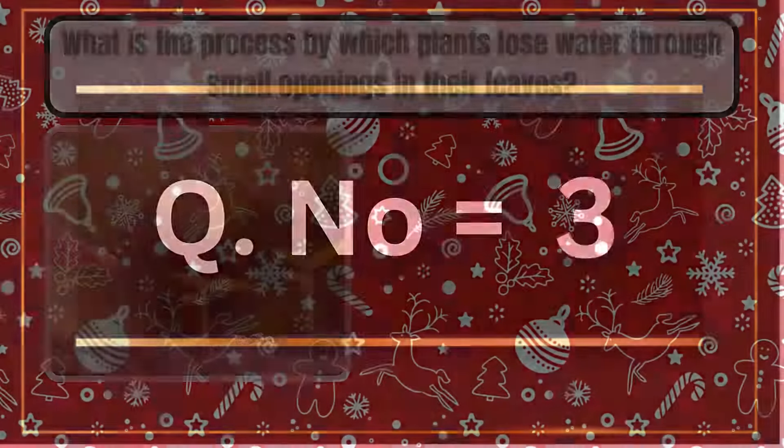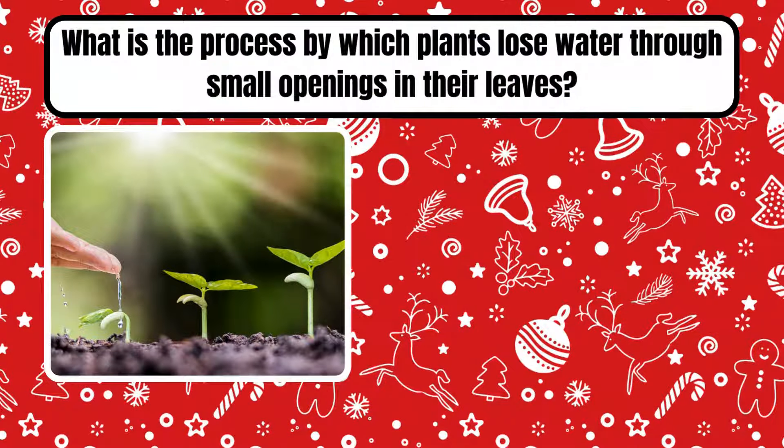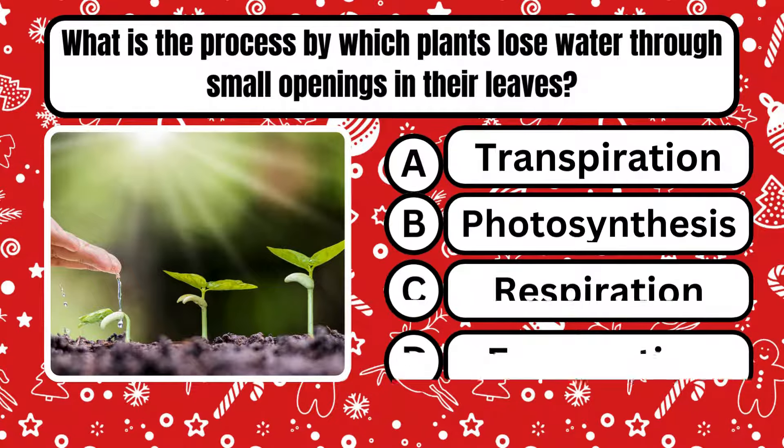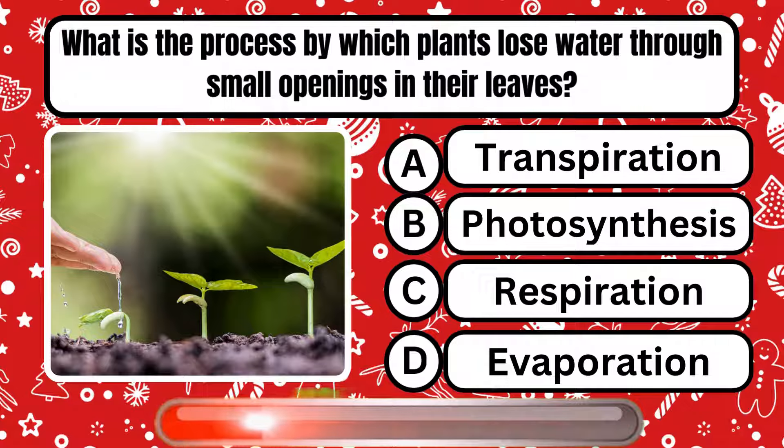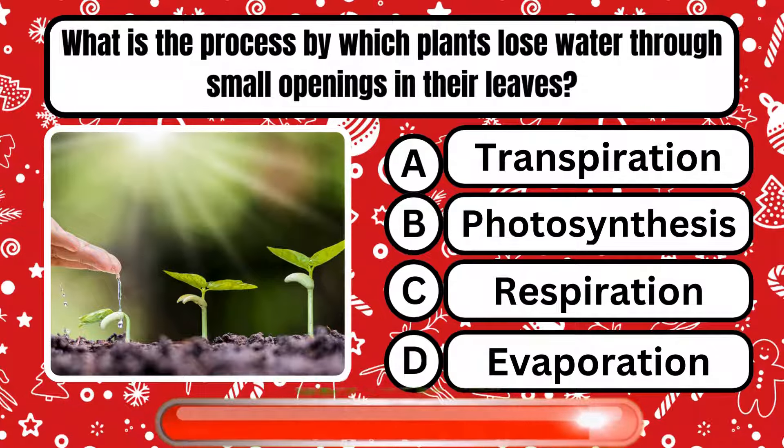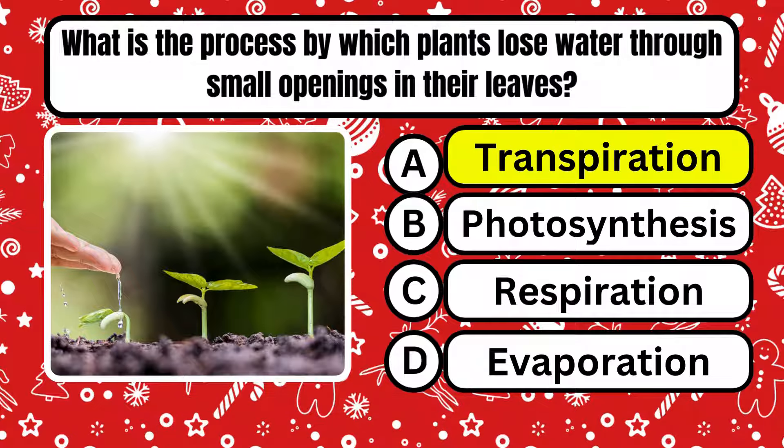Question number 3. What is the process by which plants lose water through small openings in their leaves? Right answer is option A, transpiration.